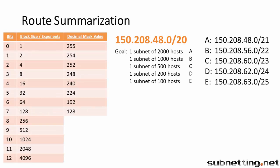Now let's take a look at route summarization, which is taking multiple subnets and combining them into a single rule. This is basically the reverse of VLSM. For VLSM, we were given a network and asked to divide it up such that certain requirements were met. For route summarization, you would be given those five networks and asked to summarize them into one answer. Here's how to calculate the answer. The first step is to write out the networks in order — in this case, they already are in order.